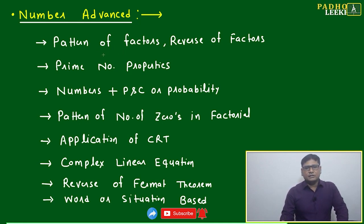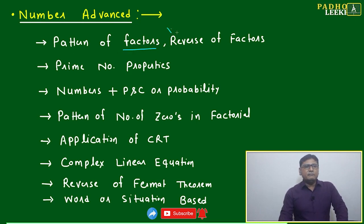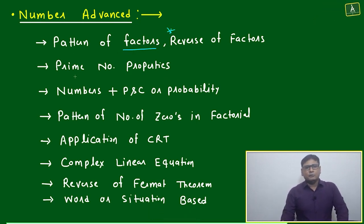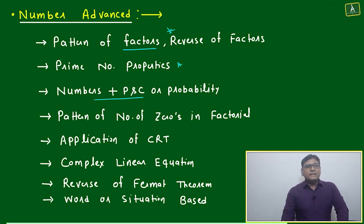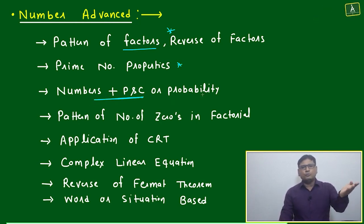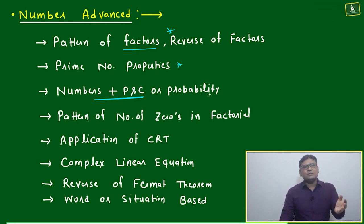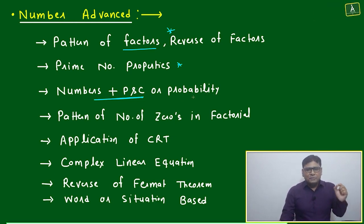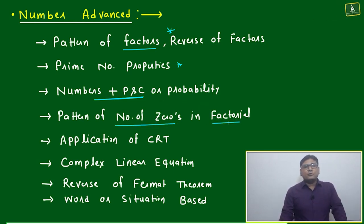I cannot include all concepts and subtopics, but I am mainly focusing on the pattern of factors and the reverse of the factor. This is one area where high-level questions are framed. Prime number properties come next, followed by numbers combined with PNC or probability — in many of the last five questions, two or three questions appear where if you are not using PNC and only using number theory, you will get trapped or may not solve correctly.